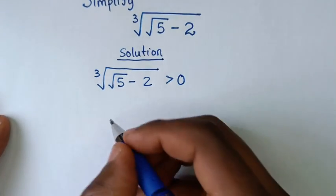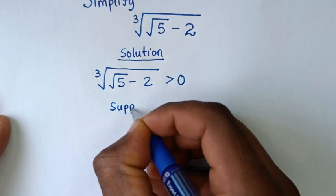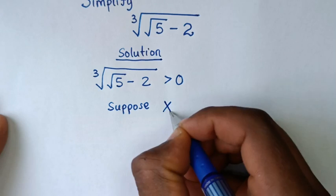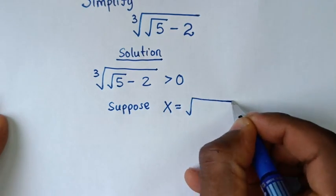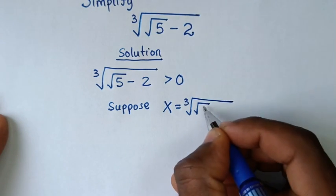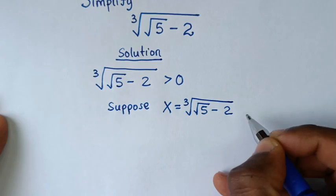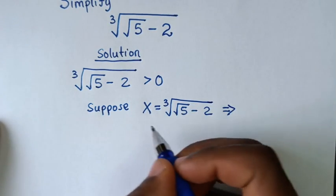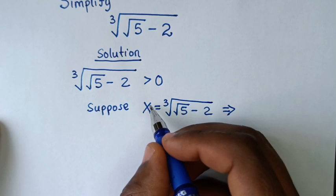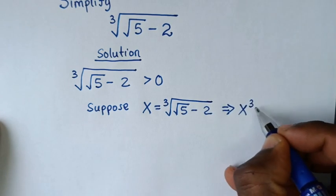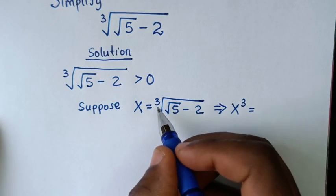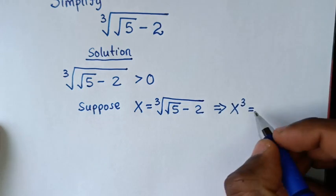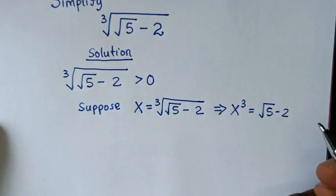Then, in the next step, suppose we let this as x. So, x is equal to cube root of square root of 5 minus 2. Then, to remove this cube root, we will raise both sides to the power of 3. So, x cubed is equal to square root of 5 minus 2.